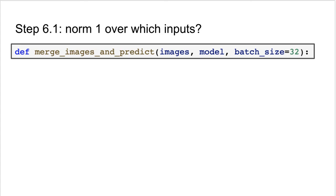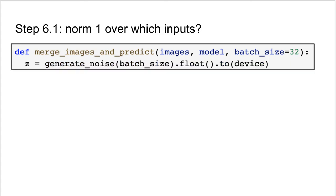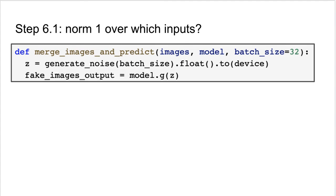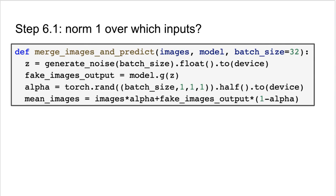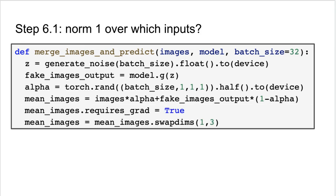So, how do we implement this? First, we sample noise and create some fake images. Then we randomly sample a vector alpha that will determine the balance between real and fake images for each such merged new image. Using broadcasting we combine the real images and the fake ones according to alpha. We turn on the gradient and get the discriminator predictions.